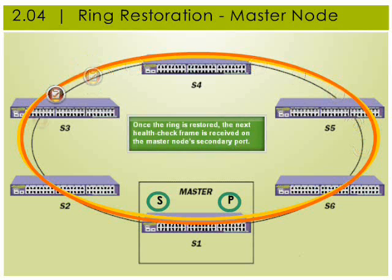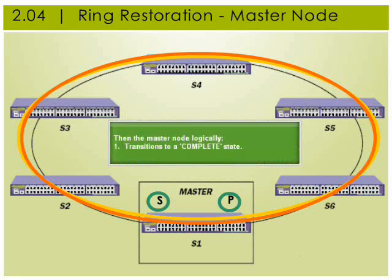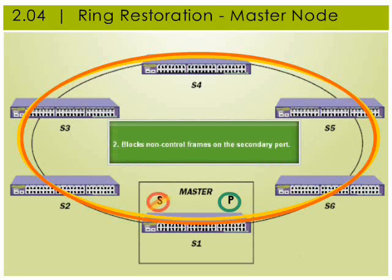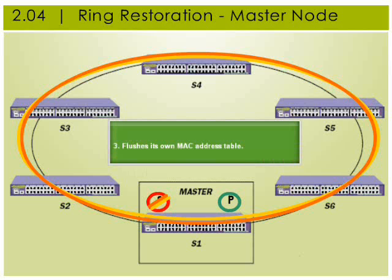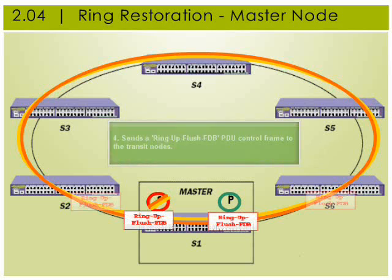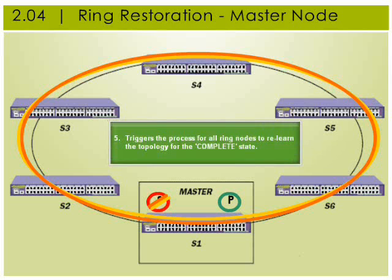Once the ring is restored, the next health check frame is received on the master node's secondary port. When this occurs, the master node logically transitions back to a complete state, blocks non-control frames from the secondary port, flushes its own MAC address table, and sends a ring up flush FDB control frame to the transit nodes — instructing them to flush their FDBs and triggering the process for all ring nodes to relearn the topology.